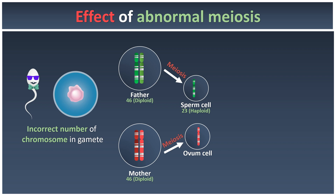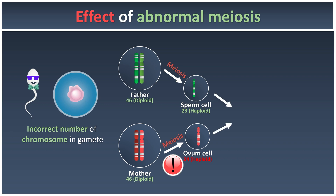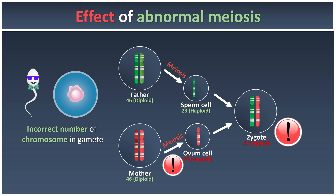But sometimes things do not go as planned. For example, this ovum cell here has 24 chromosomes. This is what we consider abnormal meiosis, where the gamete contains one extra chromosome to become 24, or sometimes only 22 chromosomes, which is one less than it is supposed to be. So there is an error. Whenever this gamete undergoes fertilization and fuses to form the zygote, the zygote will eventually have 47 chromosomes, when humans are supposed to have only 46.